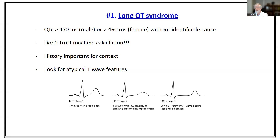Another caveat: don't always trust the machine calculation. It's pretty good, but I've seen it be off by more than 20 milliseconds in about 10 percent of the tracings I read. It's important that you do a manual correction when the stakes are high. Over time, you get used to what a normal T wave looks like and begin to spot atypical features.